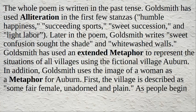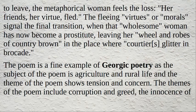Goldsmith has used an extended metaphor to represent the situations of all villages using the fictional village Auburn. In addition, Goldsmith uses the image of a woman as a metaphor for Auburn. First, the village is described as some fair female, unadorned and plain. As people begin to leave, the metaphorical woman feels the loss — her friends, her virtue fled. The fleeing virtues signal the final transition, when that wholesome woman has now become a prostitute, leaving her wheel and robes of country brown for the place where courtiers glitter in brocade. The poem is a fine example of Georgic poetry, as the subject is agriculture and rural life.